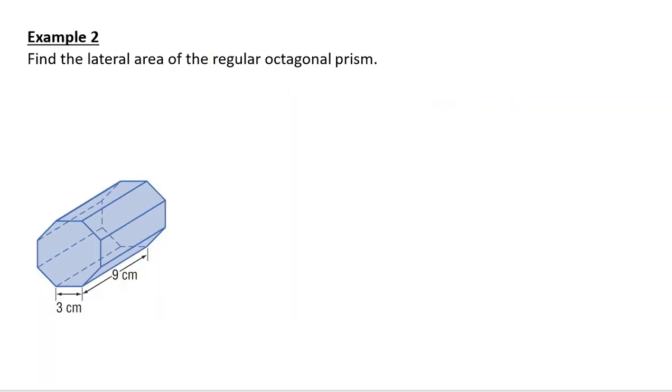For the lateral area of the regular octagonal prism, this is a regular figure, meaning that all of my sides are equal. So my lateral area is the number of sides I have, times by three, times by my height which is nine, and that is 216 square centimeters.